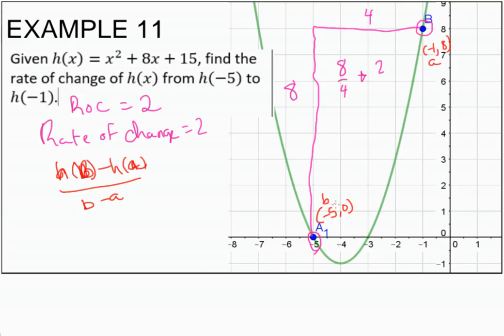So we plug it in. h of b, well, here's b, so we put 0, minus h of a, which is 8, over b, which is negative 5, minus a, which is negative 1. So we get a plus here.